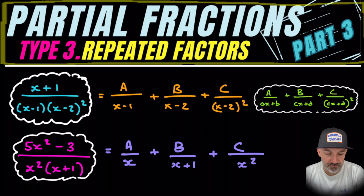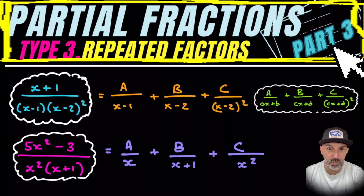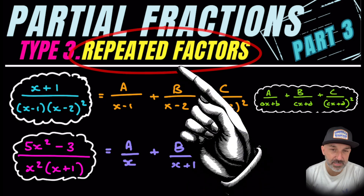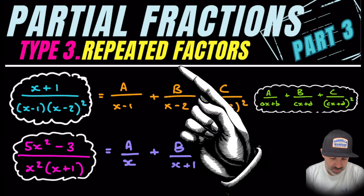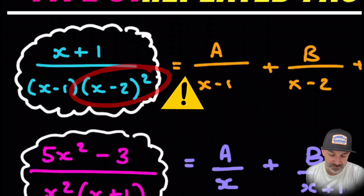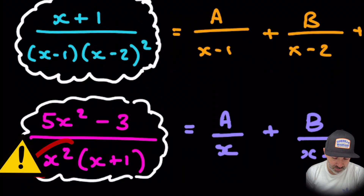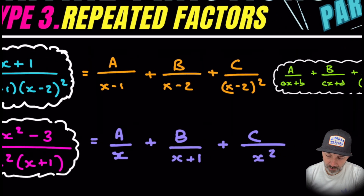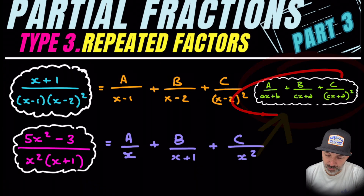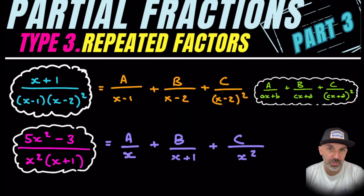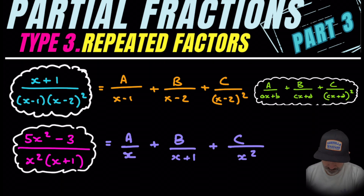Welcome back. This is part three in the video series on partial fractions, and this is when we have repeated factors on the denominators. If we look over to the left, we can see that we have a factor that is squared — and it's also the same here. We'll need to use a slightly different approach than in Type 1 and Type 2. You can check out those videos in the description or click the link above. Let's dive in.